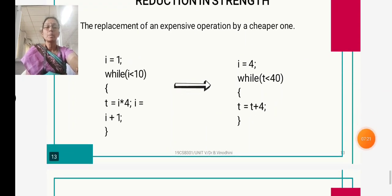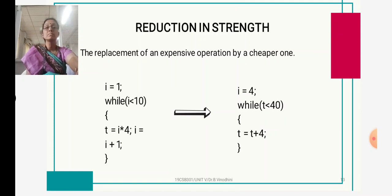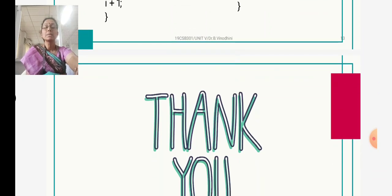The last loop optimization is reduction in strength, which means replacing an expensive operation with a cheaper one. For example, instead of using the multiplication operation, we use addition. Operations like multiplication and division are more expensive compared to addition and subtraction. Wherever we use such operations, we can reduce the strength as needed. These are all the common code optimization techniques — applied either in functions or in loops. I hope you understand what code optimization is and how we can reduce code using these techniques. Thank you.